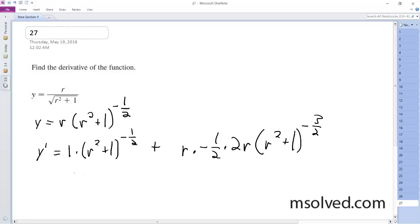So we end up with r squared plus 1 raised to the negative 1 half, plus r squared plus 1 raised to the negative 3 halves.